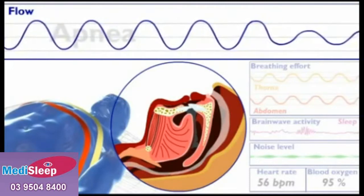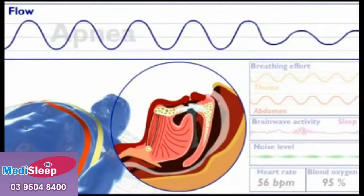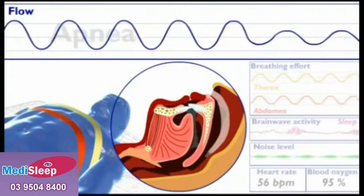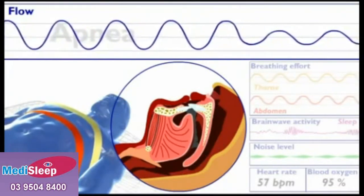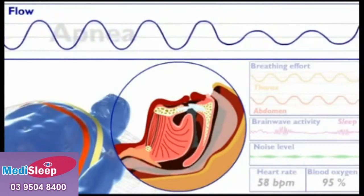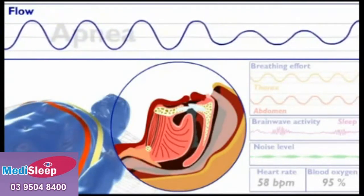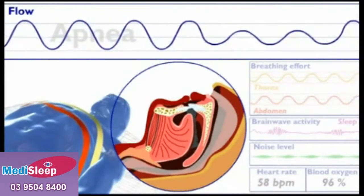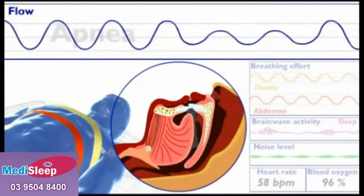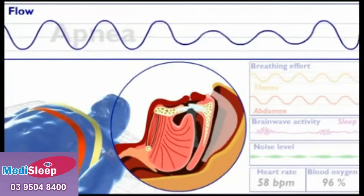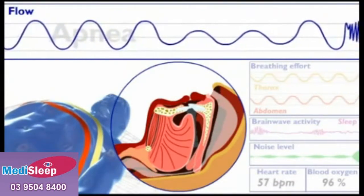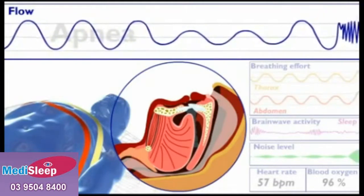An apnea is when airflow drops to below 50 percent of normal, which is known as a hypopnea. If you have sleep-disordered breathing (SDB), the amount of flow limitation you experience, with or without snoring, varies continuously during the night.